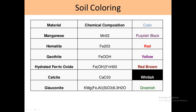In this table, we can see which material or mineral is responsible for which color developing in the soil. For example, manganese gives purplish black, hematite gives red, goethite gives yellow, hydrated ferric oxide gives red-brown, calcite gives whitish color, and glauconite gives greenish color.